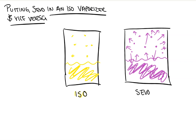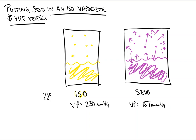We're going to look at these at 20 degrees Celsius, which is about room temperature. We know that the vapor pressure of isoflurane is 238 mmHg and the vapor pressure of sevoflurane is 157 mmHg — this is at room temperature. Of note, vapor pressure is innate to every chemical.